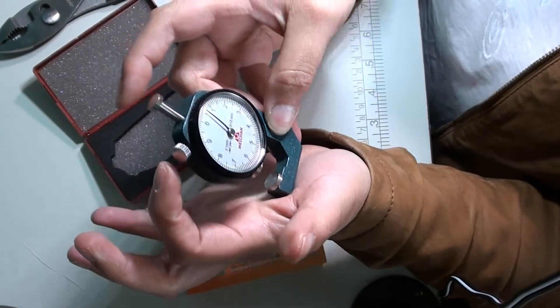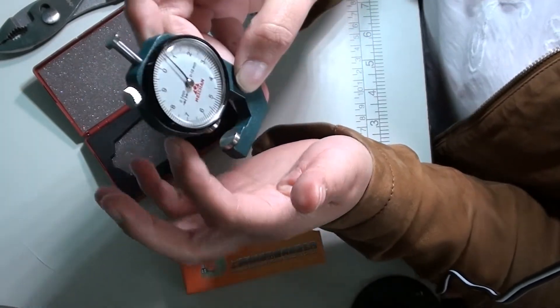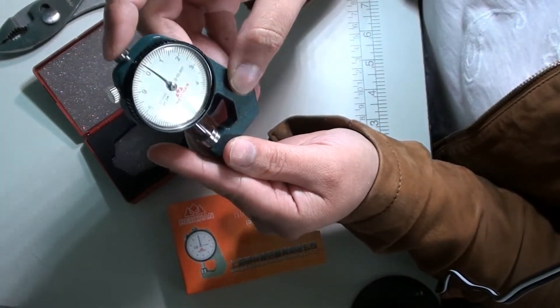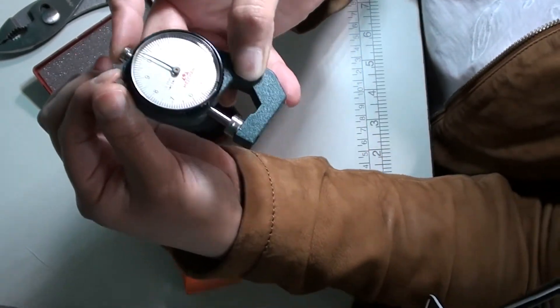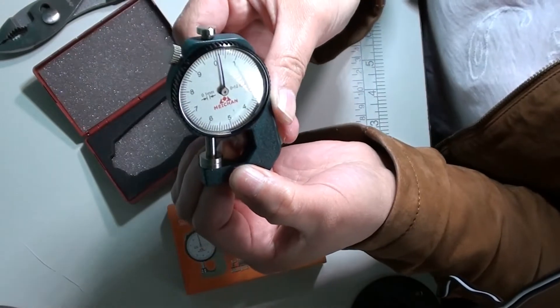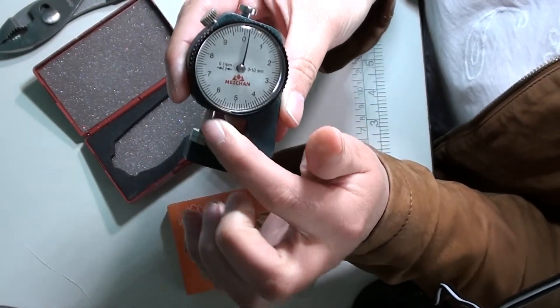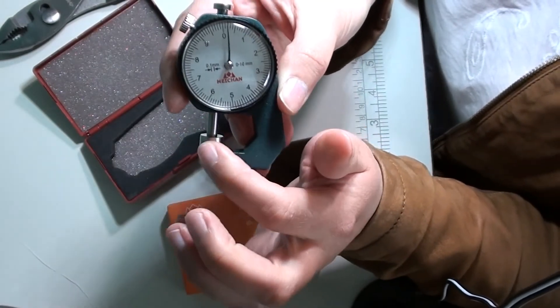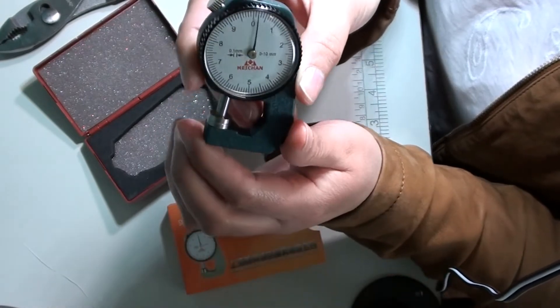This little dial right here is not to calibrate this, but it is to hold these plates in place. So if you tighten the screw, it will keep the plates in place.